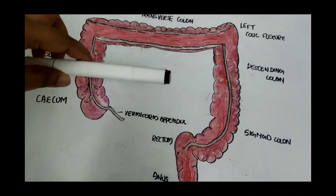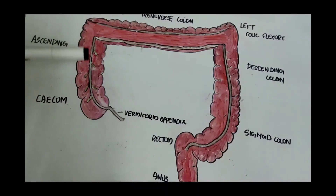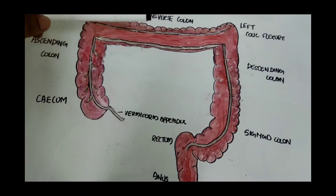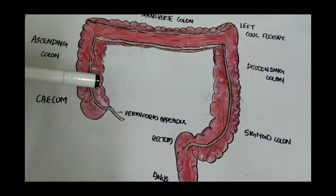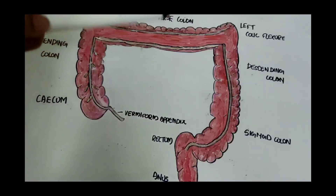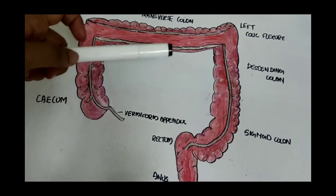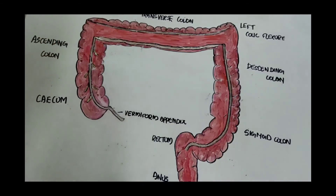The sympathetic nerve supply is received from the celiac and the superior mesenteric ganglia, whereas the parasympathetic supply is received from the vagus nerve.